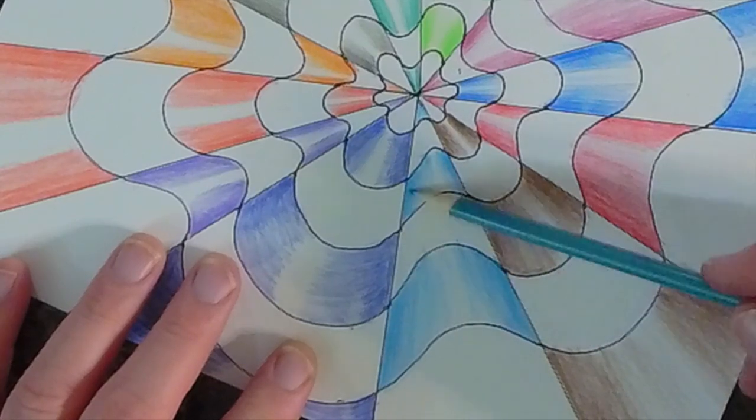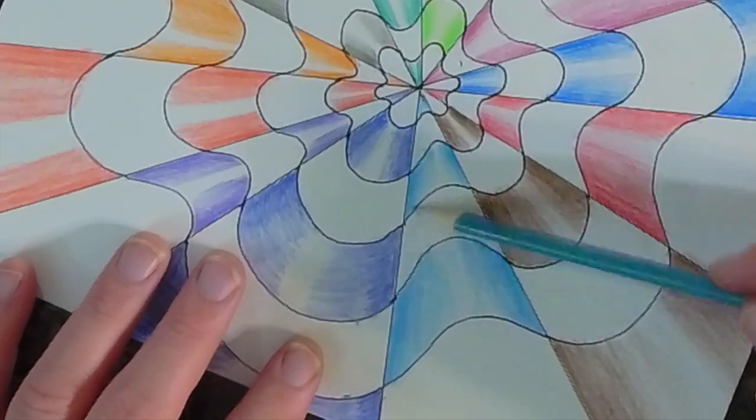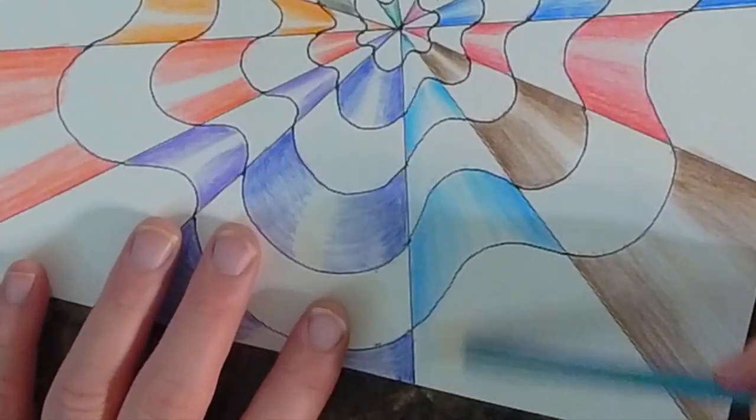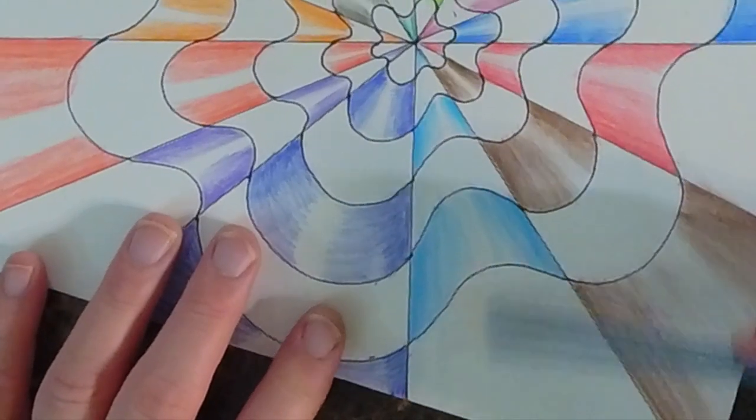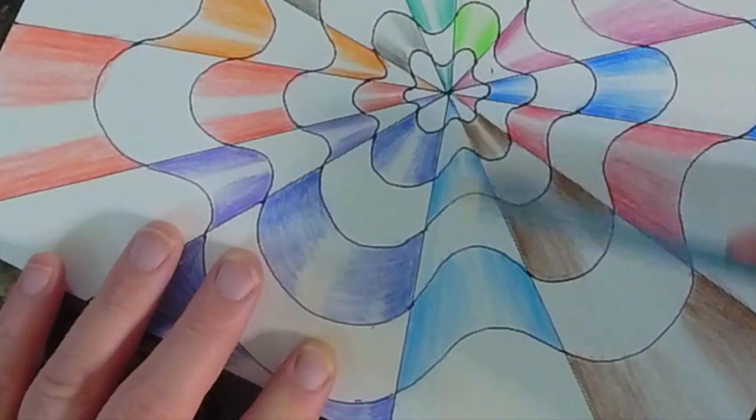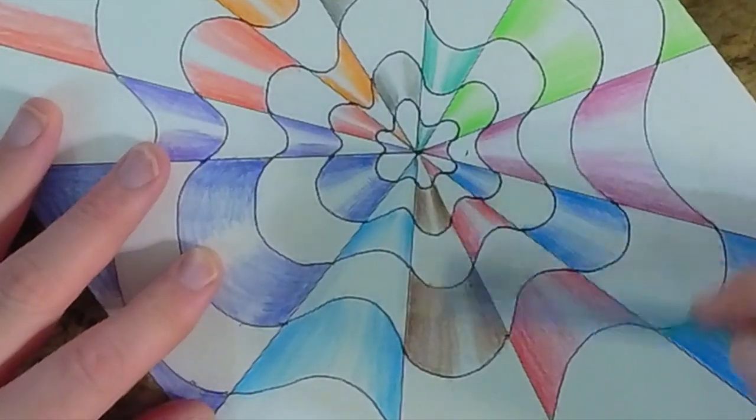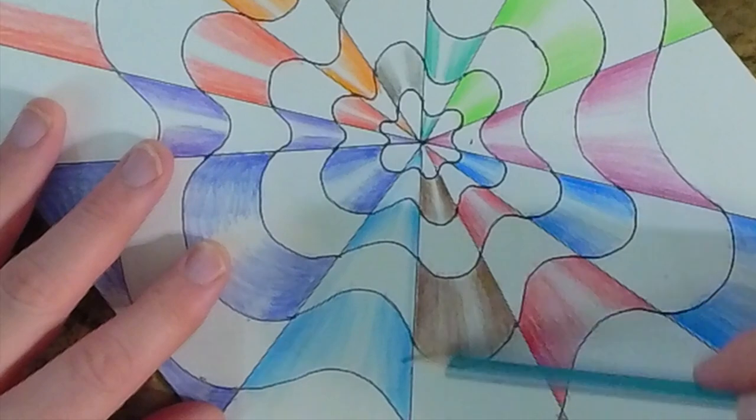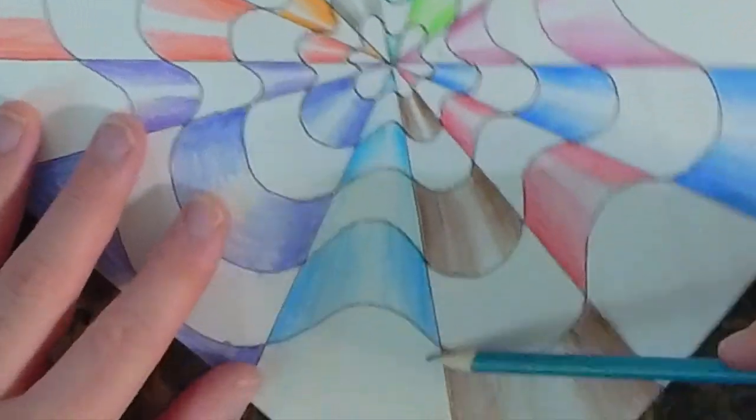So now what I'm going to do is I'm going to take my pencil, and you see how I'm turning it to the side, and I'm just going really lightly on the white parts. And of course, I'm going over the colored part as well, and that's automatically shading it a little bit more. What I'm doing is I'm giving this just a little bit of a shadow within its own color.